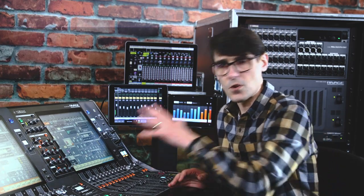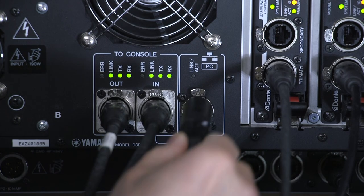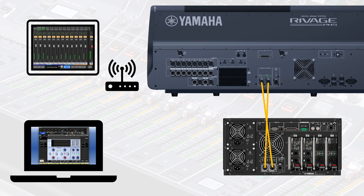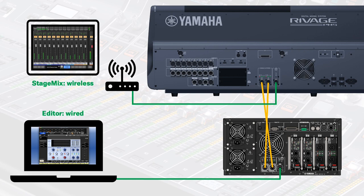Now you have to choose which network port to use in the RIVAGE PM system. You could connect to the console or DSP engine. If you're using the PM Editor software, it's recommended to use a different connection. PM Editor will use a different static IP address in the range 192.168.53, and it needs a wired connection because of the necessary communication bandwidth. So if PM Editor is connected to the DSP engine, use the console for the Wi-Fi connection.